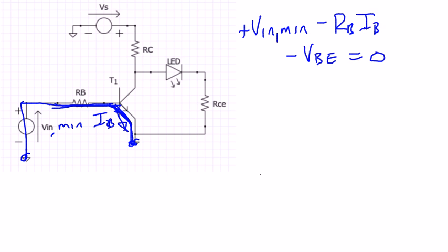So now, if we rearrange this and solve for IB, then we'll calculate and find that that is equal to 0.096 milliamps. So not a lot of current at all, very small.